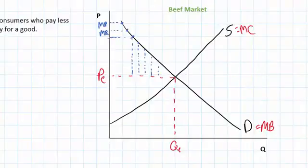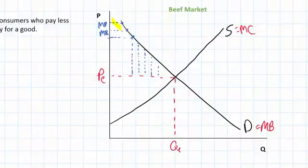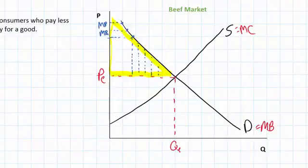Assuming the demand curve represents thousands or even millions of consumers, there are points all along this demand curve representing individual consumers who are willing to pay more than the actual price of PE. The area therefore below the demand curve and above PE represents graphically the additional benefit or happiness of all the consumers who bought beef at a price lower than they were willing and able to pay. I'm going to shade the total area of consumer surplus on this graph in yellow.